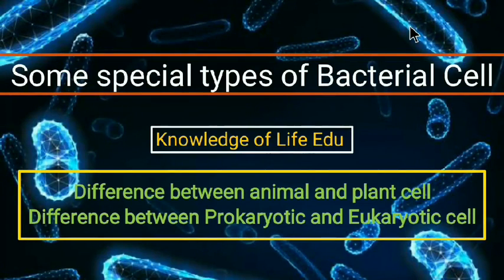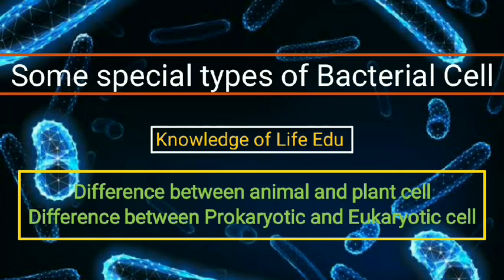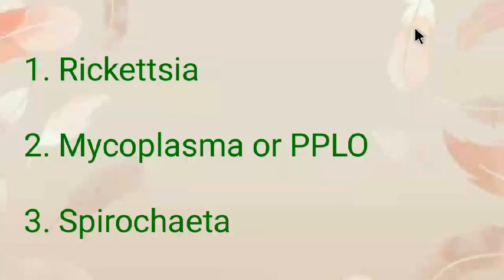Hello everyone, welcome to another episode of our channel. In the previous video we discussed about the eukaryotic cell and prokaryotic cell. Today we will discuss about some special types of bacterial cell, the difference between animal cell and plant cell, and the difference between prokaryotic cell and eukaryotic cell. We will discuss about rickettsia, mycoplasma, and spirochetes.